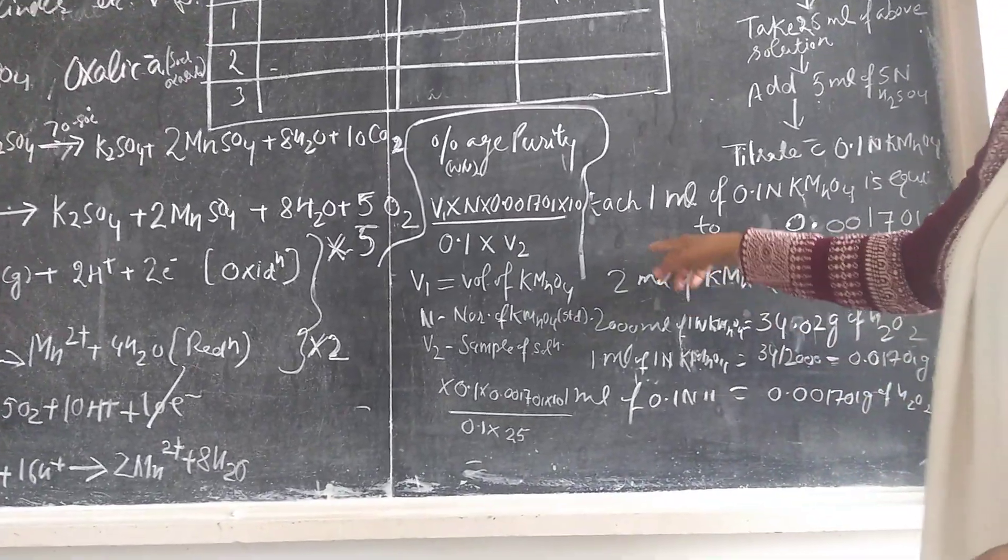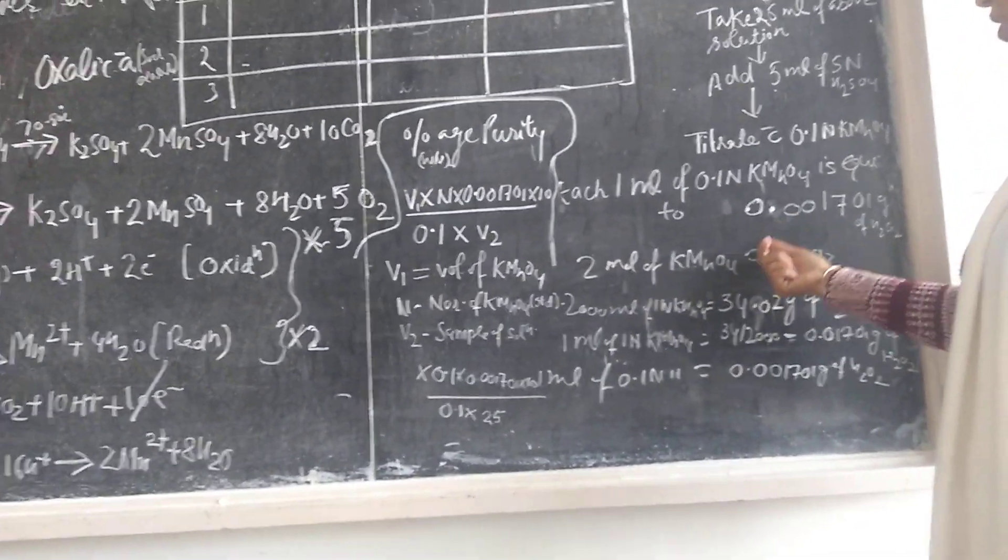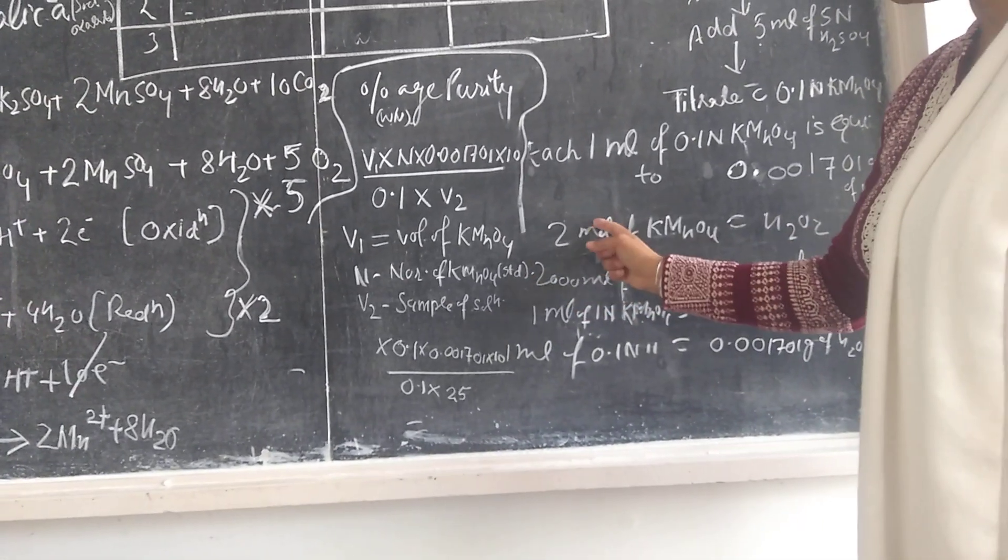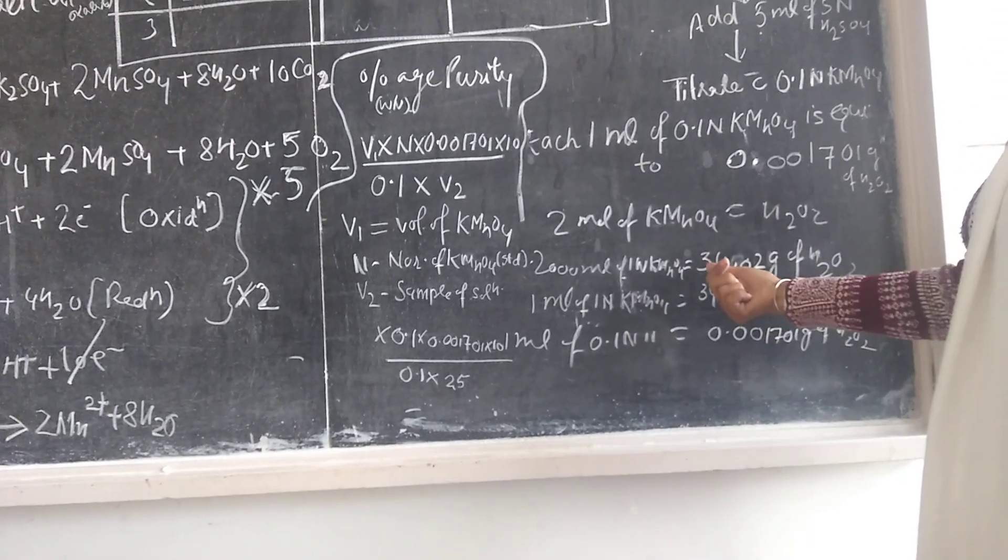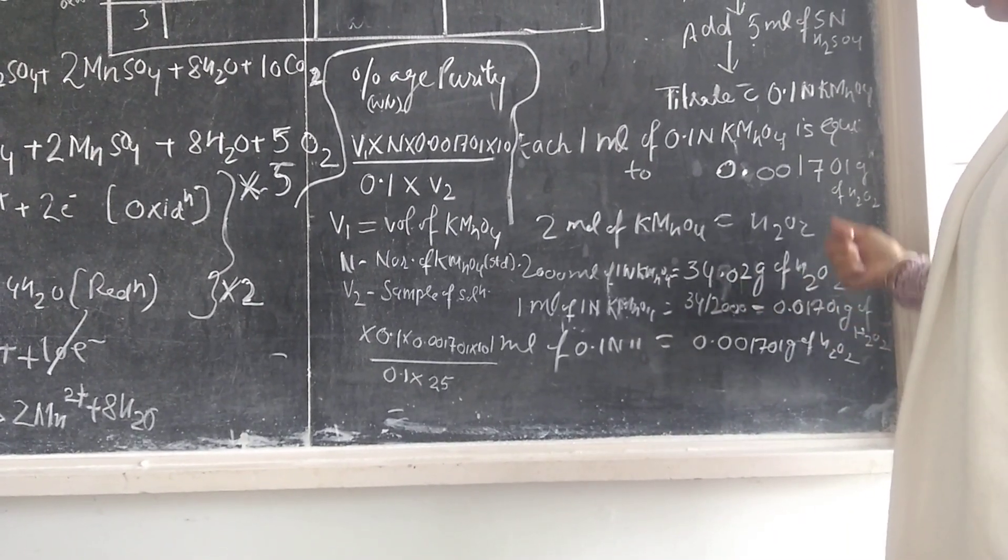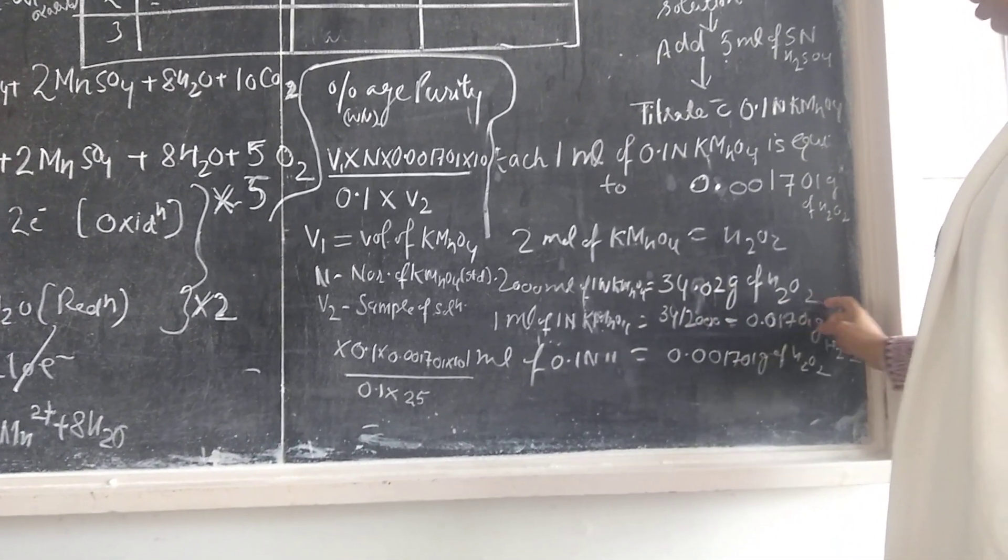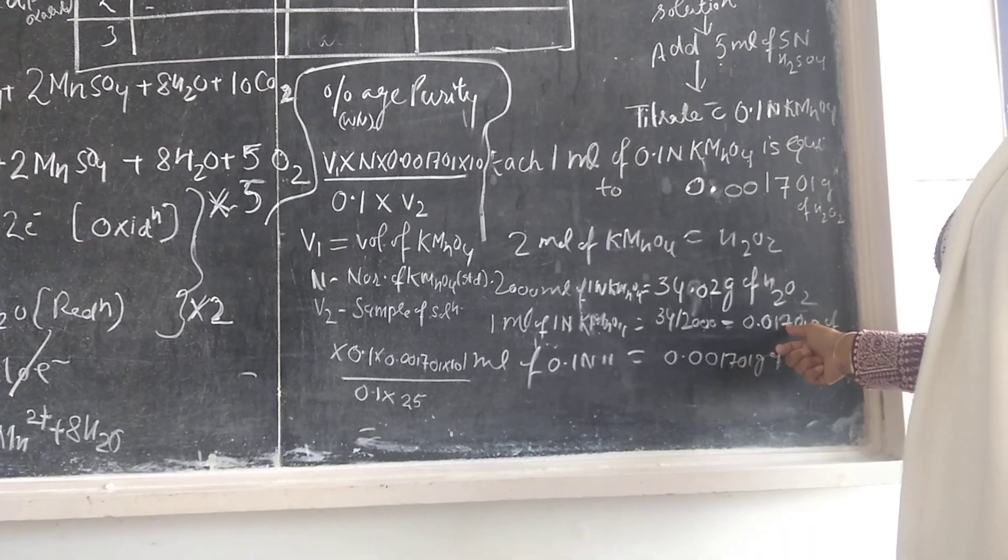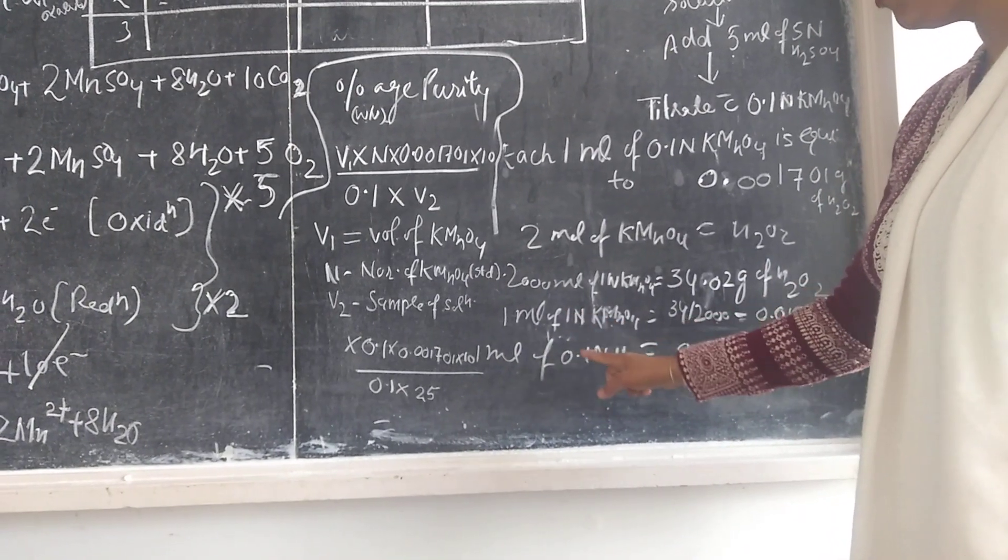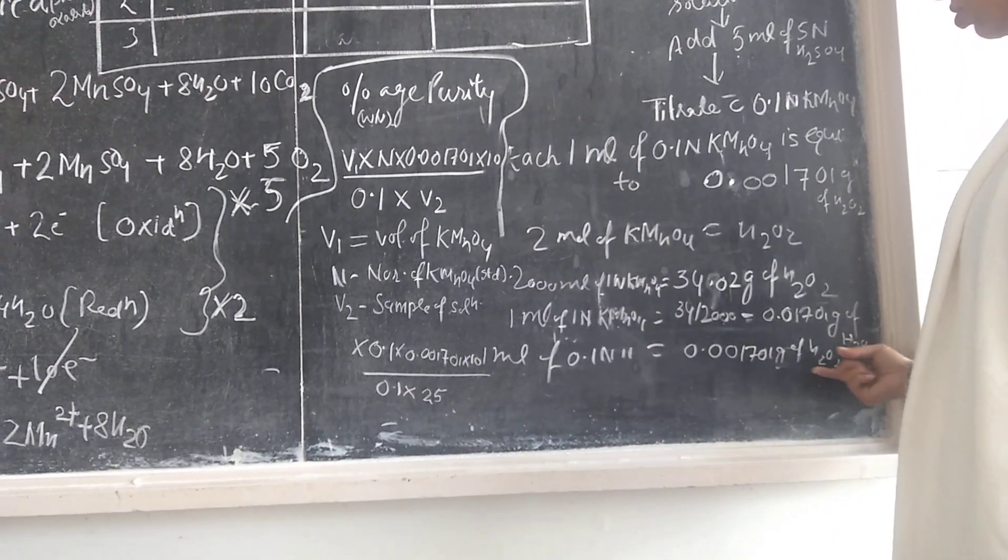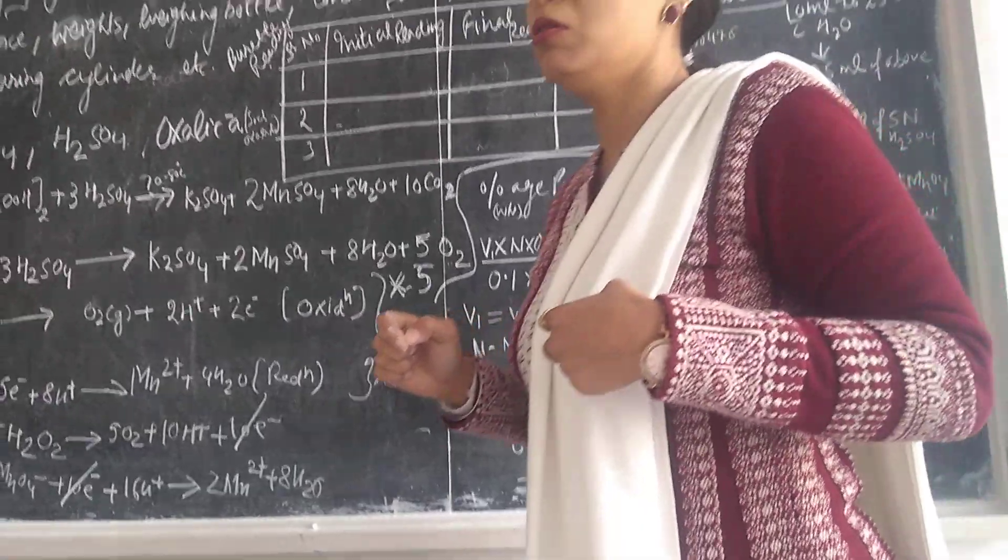Each ml of 0.1 normal KMnO4 is equal to 0.001701 gram of hydrogen peroxide. This is the factor calculation. Here two moles of KMnO4 will equal to two moles of hydrogen peroxide. Two moles means 2000 ml of 1 normal KMnO4 equals molecular weight of H2O2 in grams. So 1 ml of 0.1 normal gives 0.001701 gram of hydrogen peroxide.